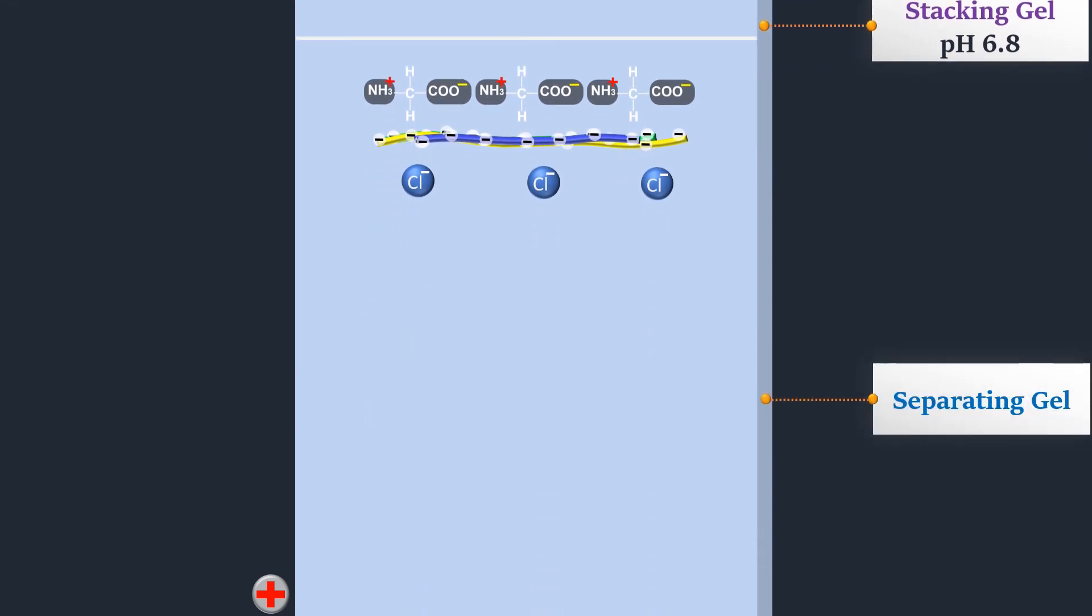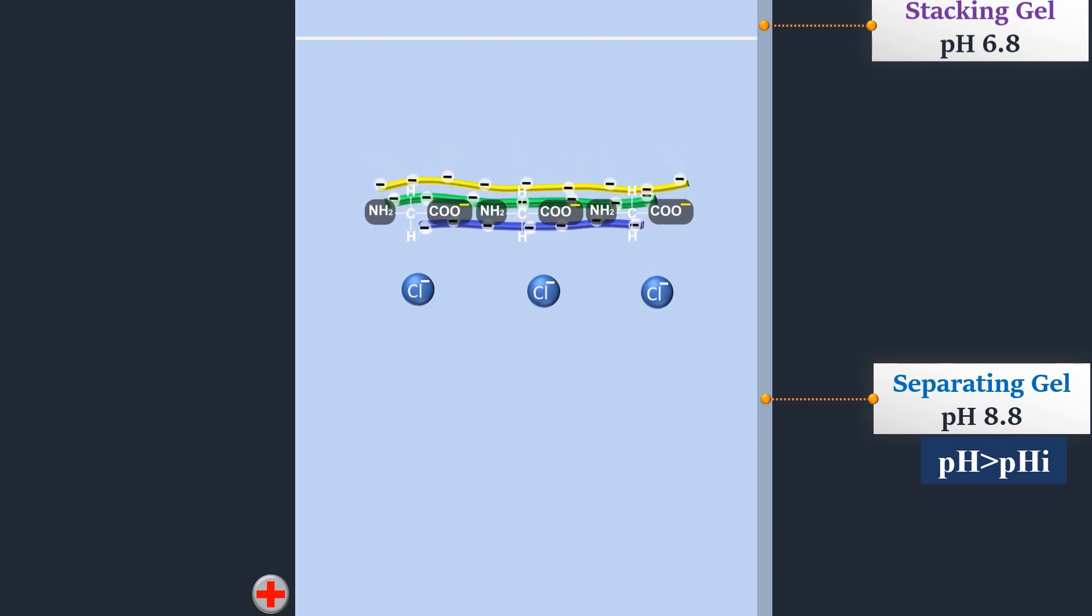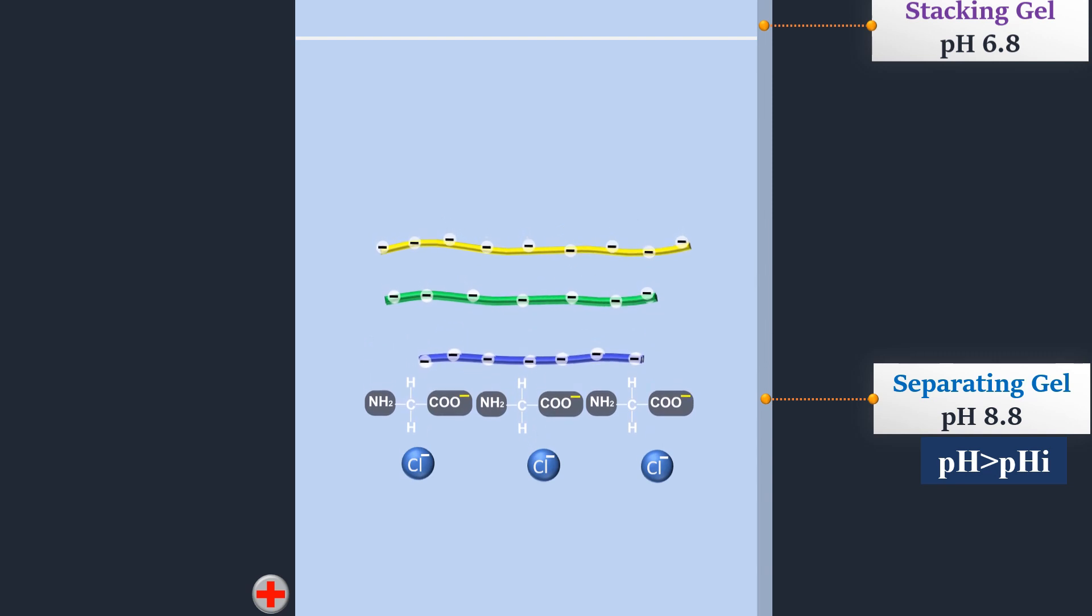This procession carries on until it hits the separating gel, where the pH switches to 8.8. At this pH the glycine molecules are mostly negatively charged and can migrate much faster than the proteins. Proteins are separated, so higher molecular weight proteins move more slowly through the porous acrylamide gel than lower molecular weight proteins.